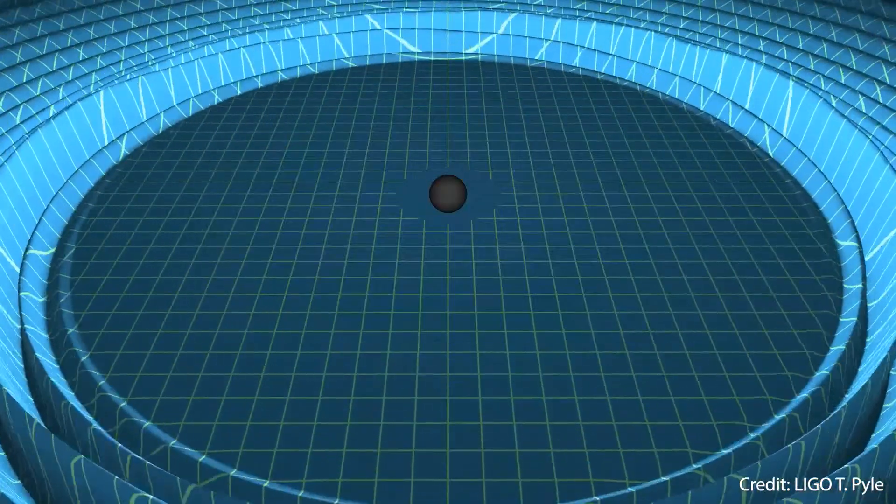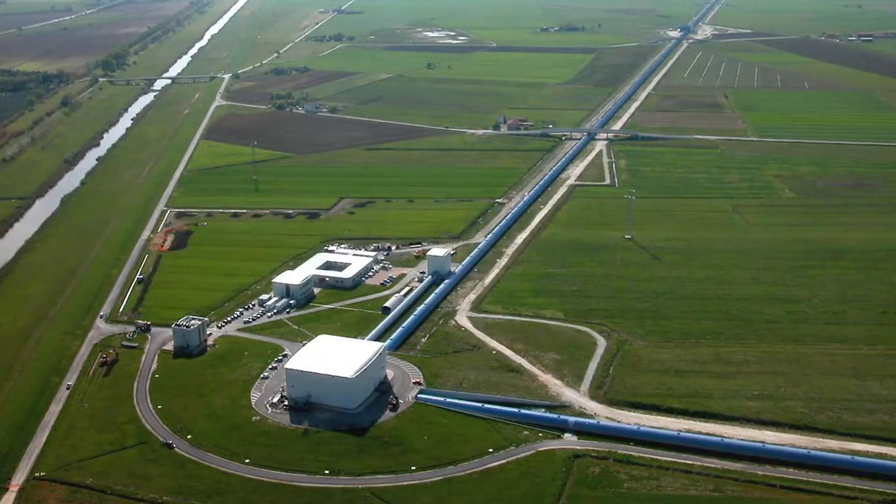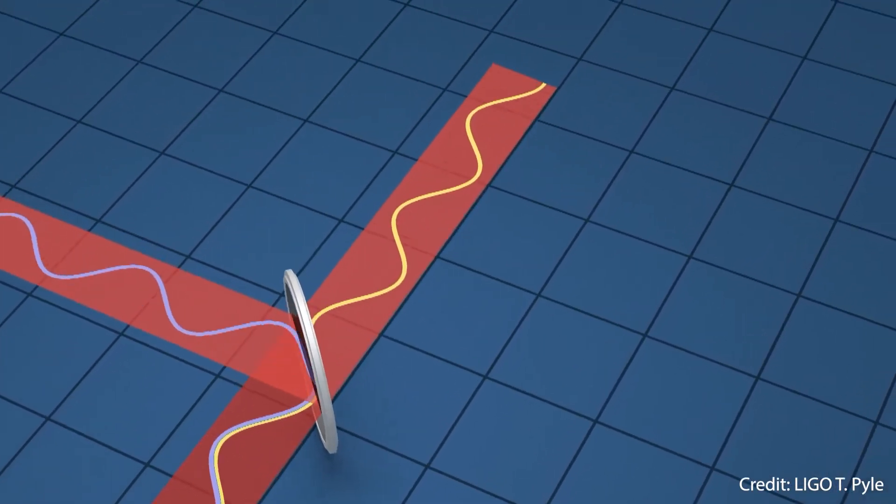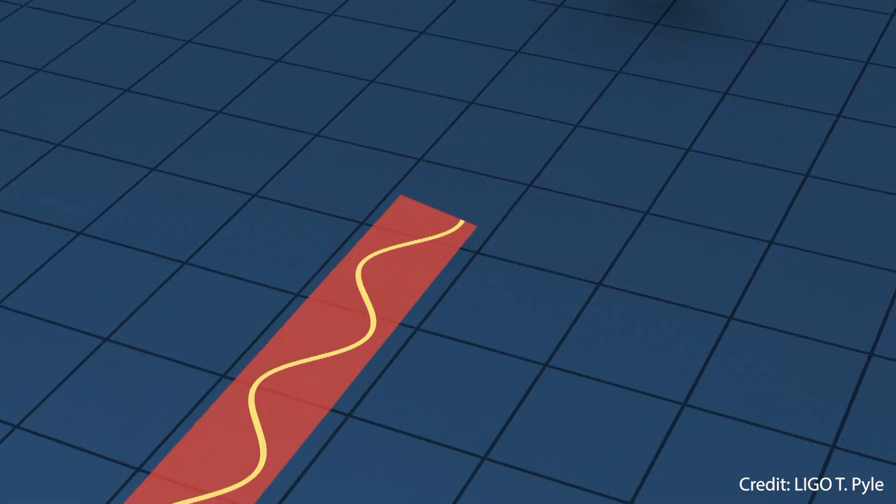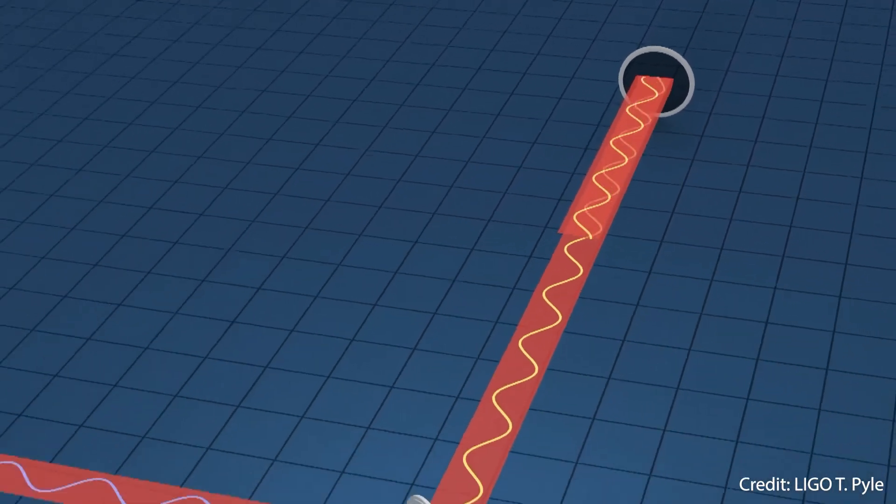We have managed to detect this type of gravitational wave using both the Laser Interferometer Gravitational Wave Observatory, known as LIGO in the United States, and its Italian counterpart, Virgo. These interferometers work by sending a laser down two paths, which are then reflected back and measured. The time difference between these paths can be used to detect the gravitational waves.